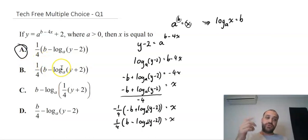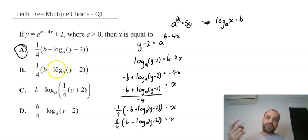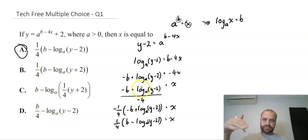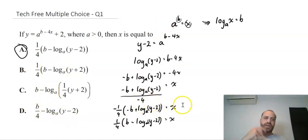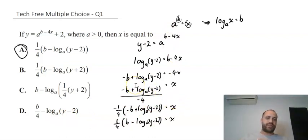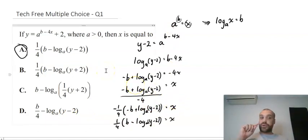Now that you've done that — if you did pause and try it — if you got B, C, or D, think about why and where your error was. If you had no idea how to get started, go and look for some of these questions. We are moving on to question two.